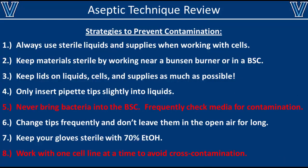In review, here are eight basic tips to prevent contamination of your cell cultures. First, always use sterile liquids and supplies when working with cells. Second, keep materials sterile by working near a Bunsen burner or in a biological safety cabinet. Third, keep lids on liquids, cells, and supplies whenever possible to minimize exposure to open air. Fourth, when transferring liquids with pipette tips, only barely insert the tip into the liquid — just enough to suck up what you need. Don't completely submerge the tip and definitely do not submerge the pipette itself.